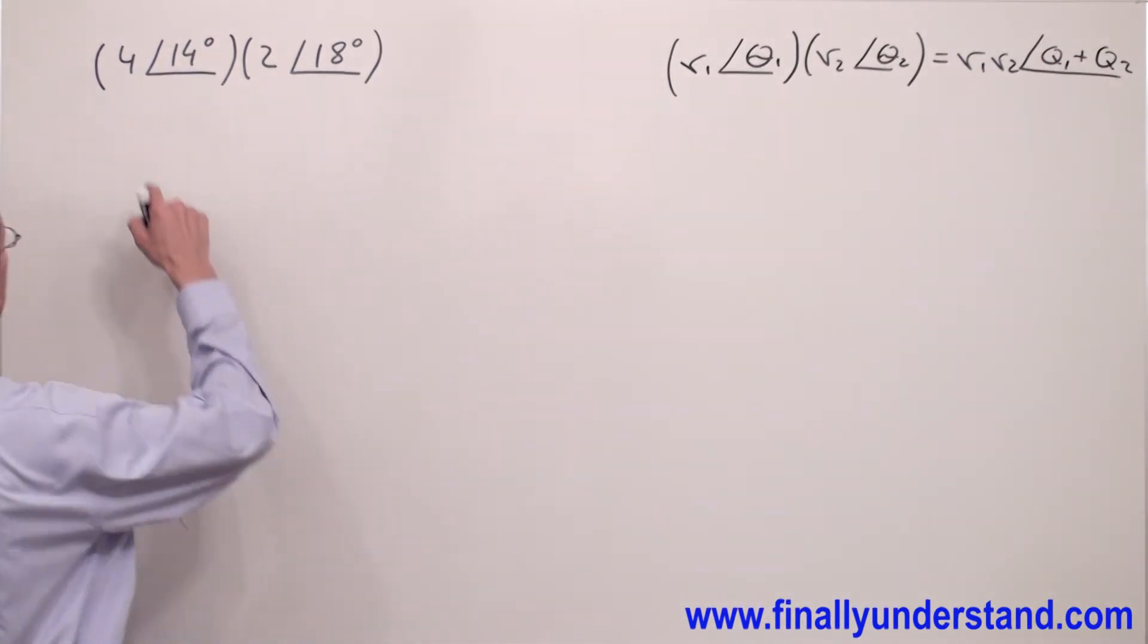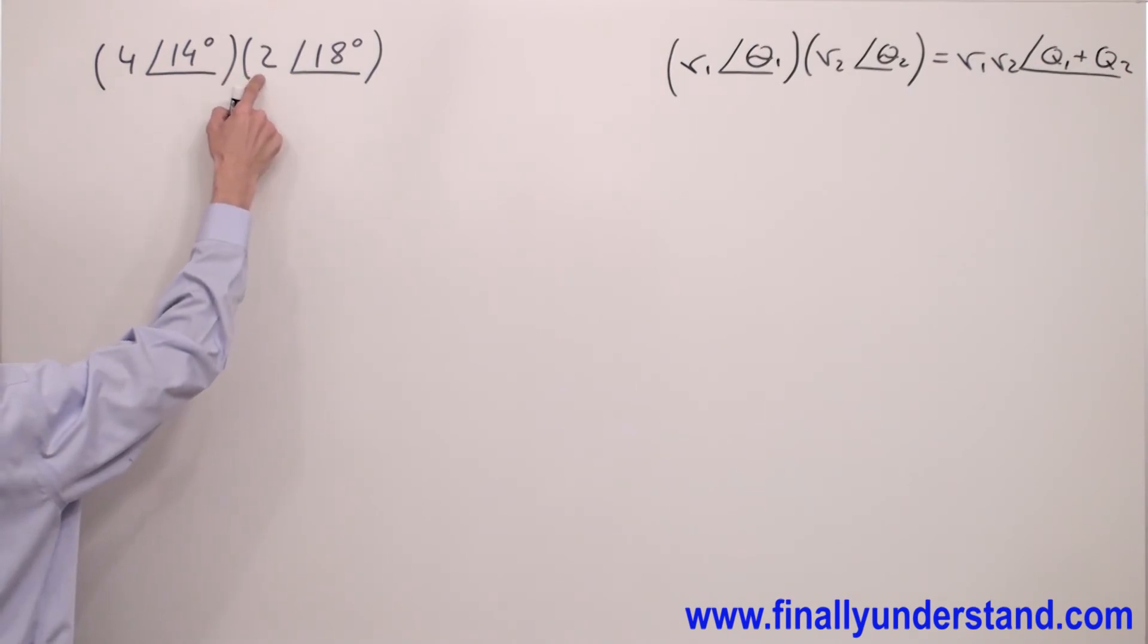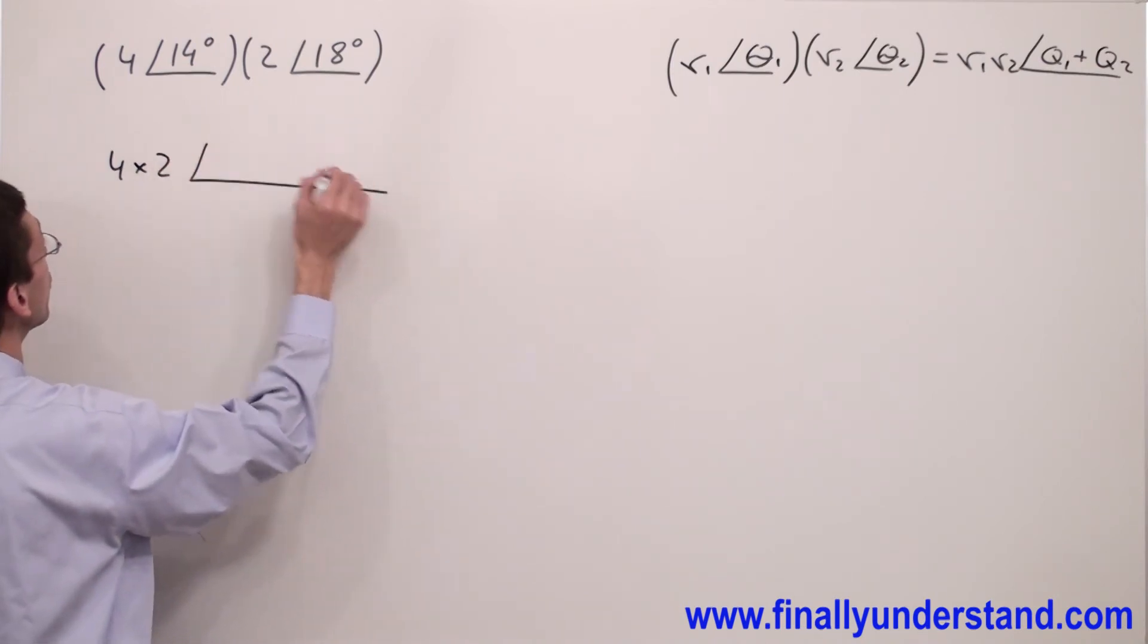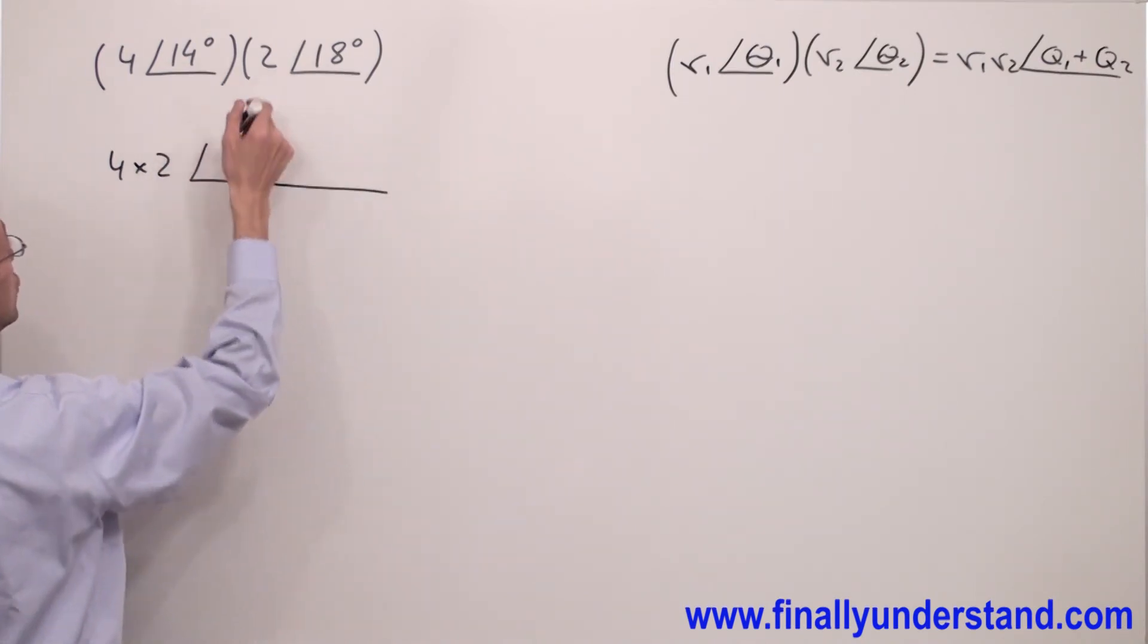So we have magnitudes four and two. What we're supposed to do is multiply four times two, and for the angle, we're supposed to find the sum of these two angles.